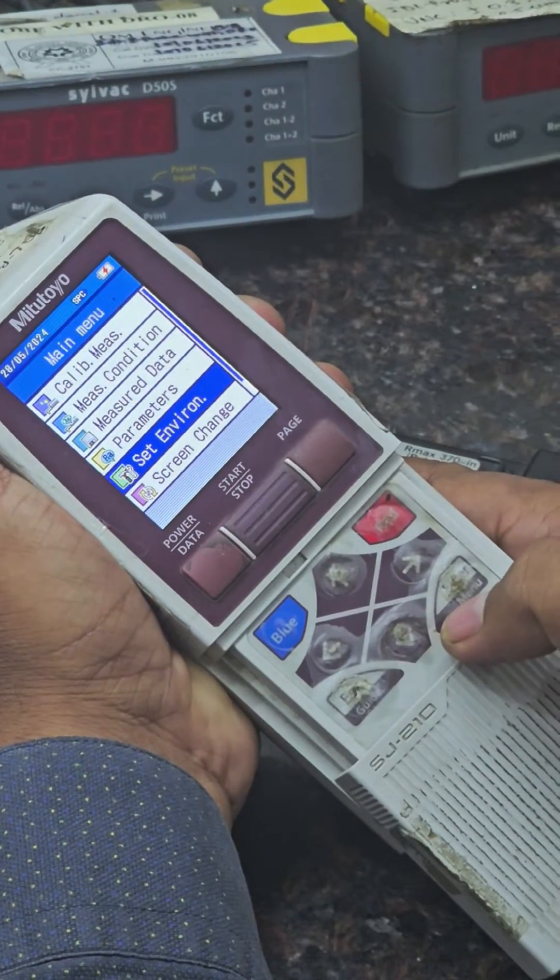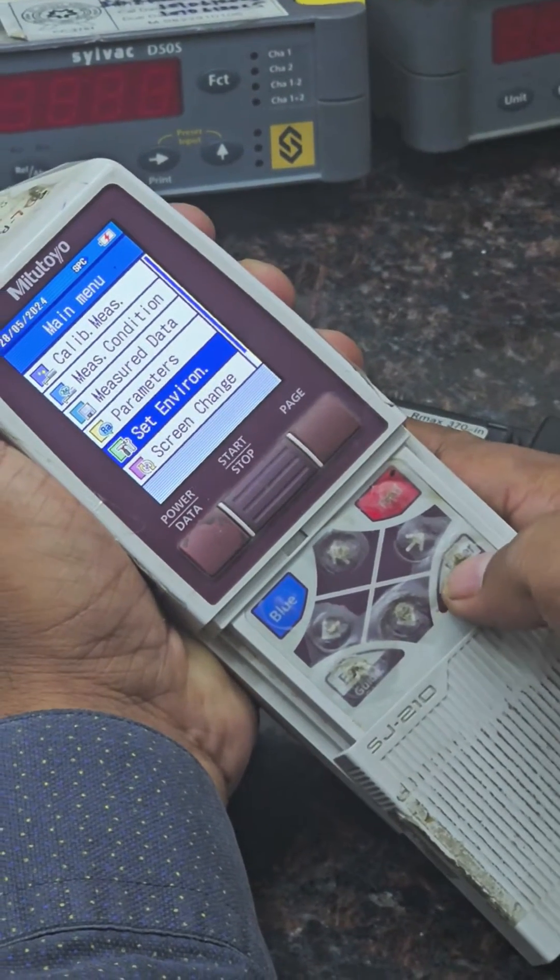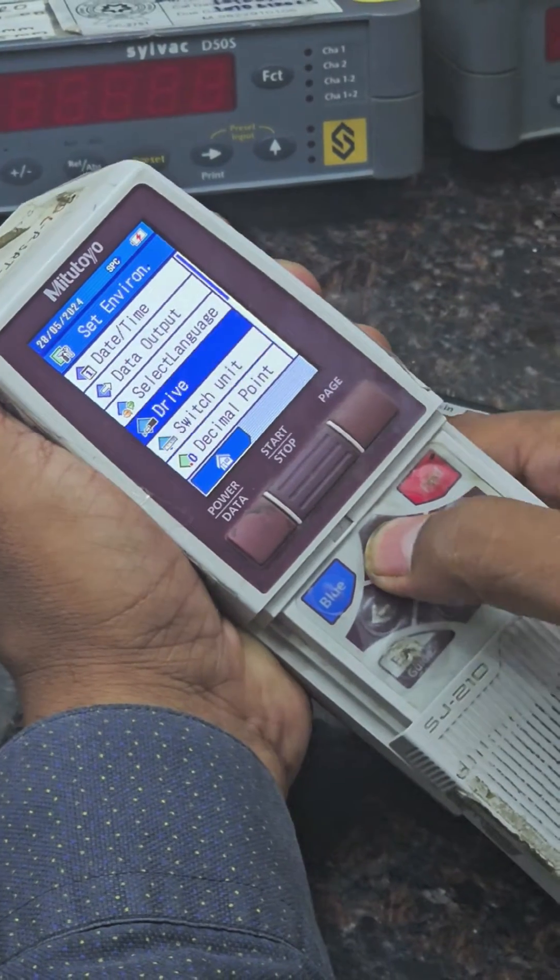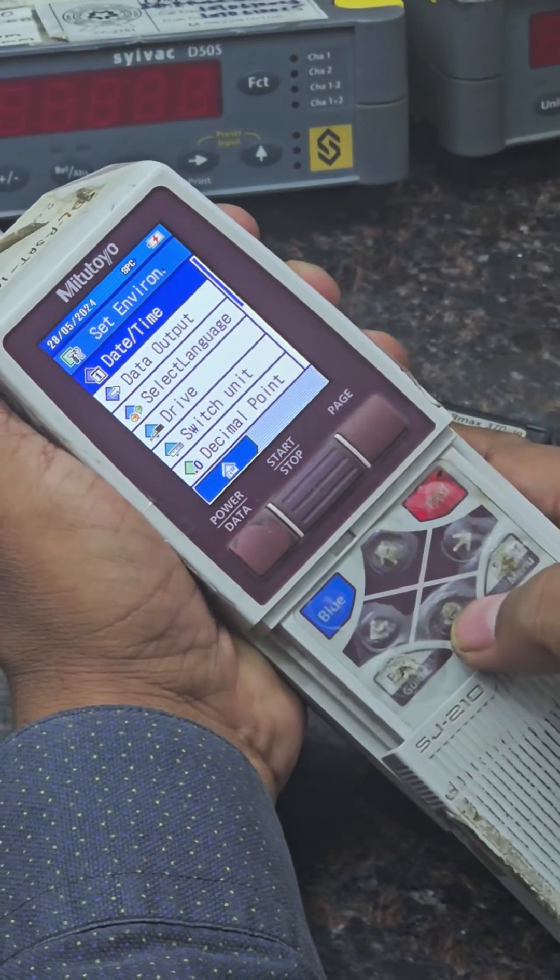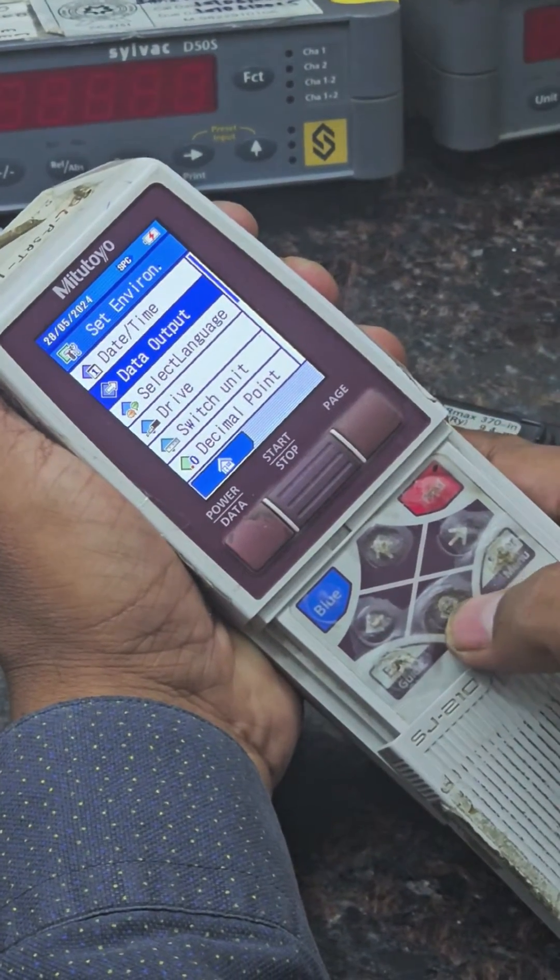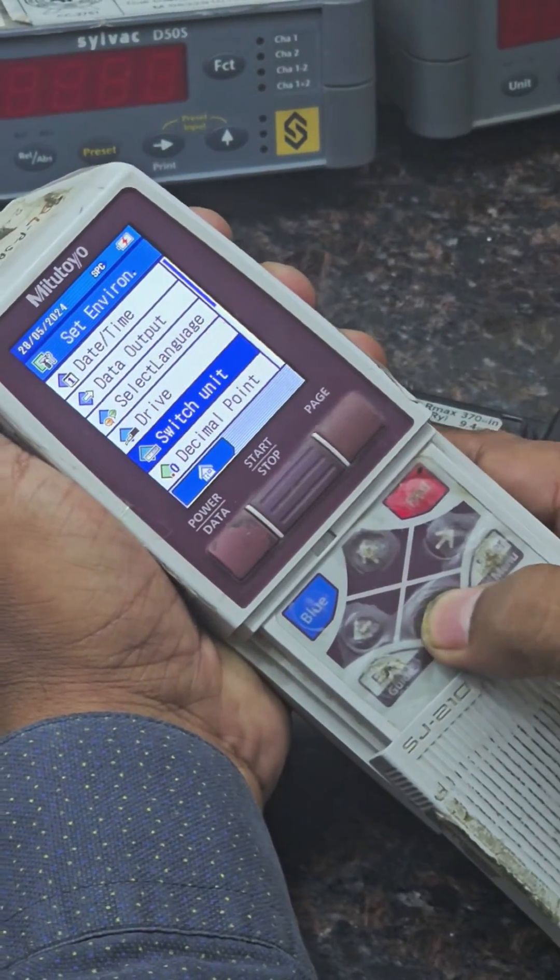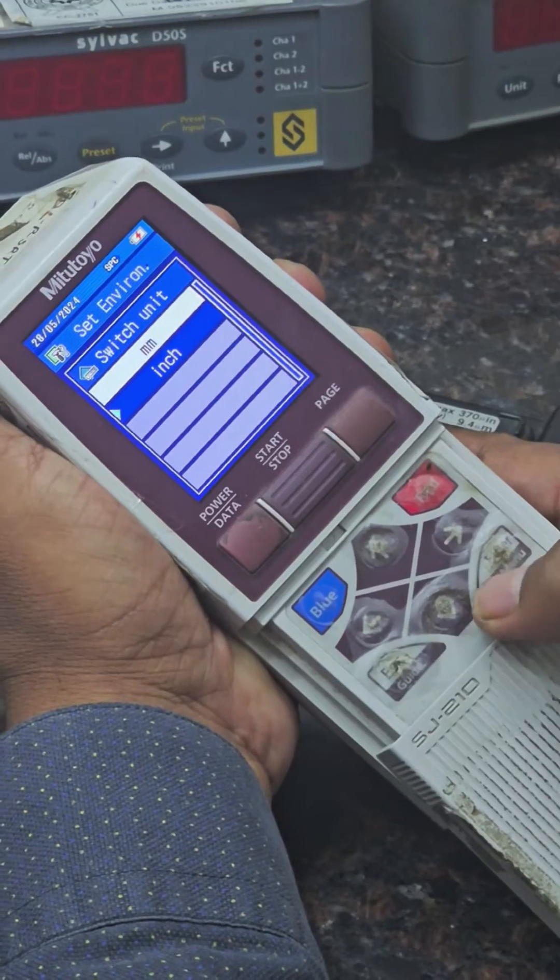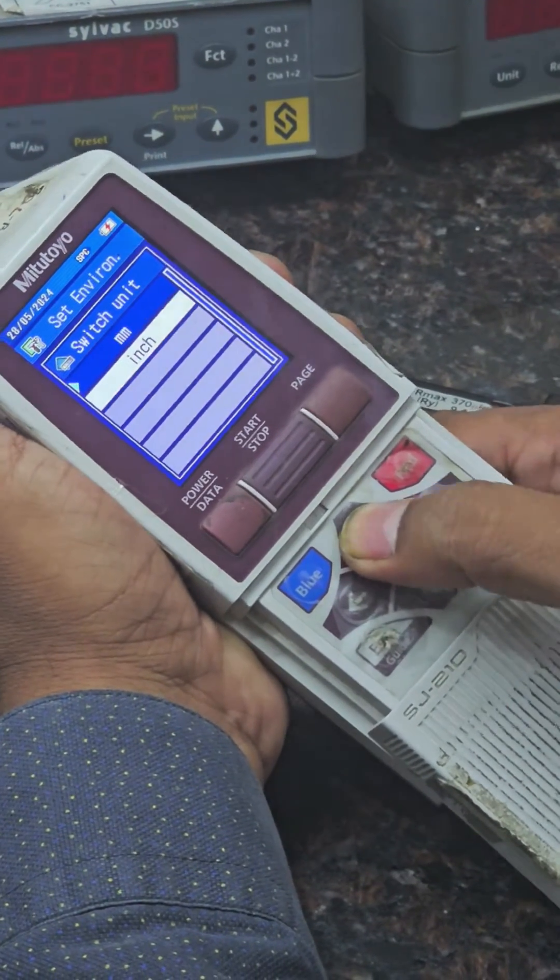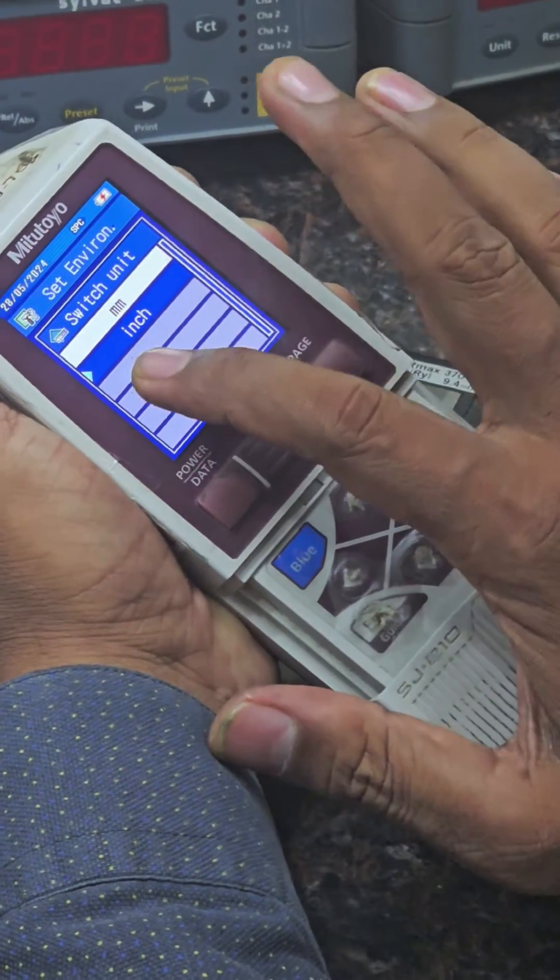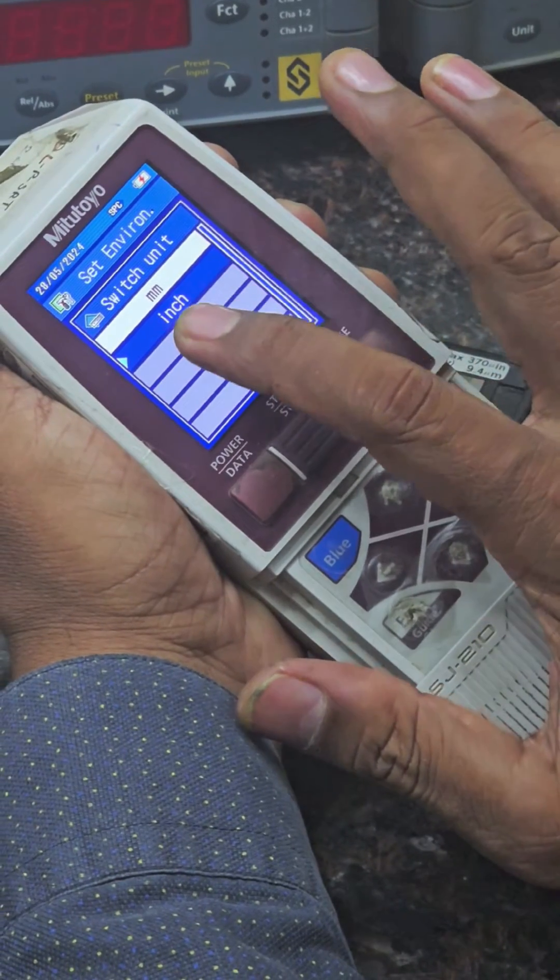In set environment, press enter. Set environment contains: date and time, data output, select language, and unit. Unit is inch and mm. The blue color indicates what is selected. See the arrow - this means the machine is in inch.